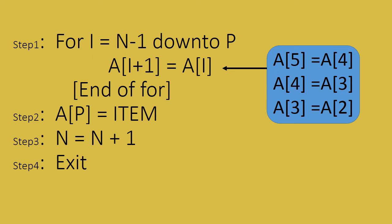Now let us consider the algorithm for inserting. Step 1: for loop, i is equivalent to n minus 1, down to p. Here n is the number of elements in the array, and p is the position where the new element needs to be introduced. Using the for loop, elements must be moved to the higher order, one by one — from the n-1th location up to the position.